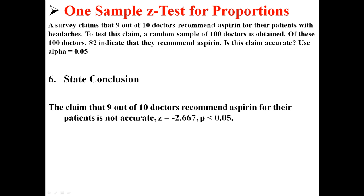And this thing here, z equals negative 2.667, p is less than 0.05, that's the official format for stating the result. You don't really have to do that unless your teacher asks you to. But just know that that's the answer. We reject the null hypothesis and say that this original 9 out of 10 claim is not accurate at all.